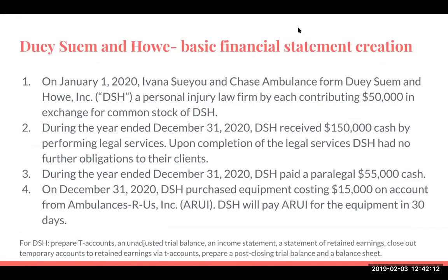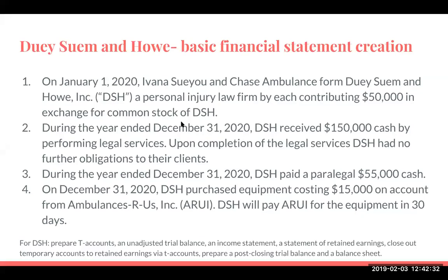Now we're going to get into an example for Dewey Suum and Howe, basic financial statement creation. On January 1st, Ivana Suyu and Chase Amulance Forum formed Dewey Suum and Howe, a personal injury law firm, by each contributing $50,000 in exchange for the common stock of DSH. During the year, they performed some services and had some expenses. I'm going to jump over to our Google Sheet.